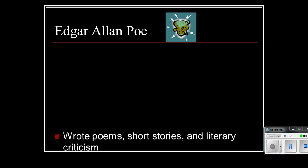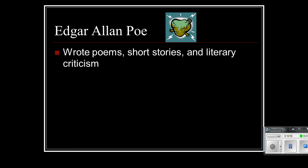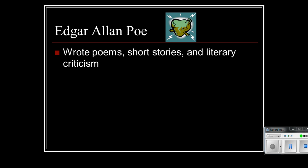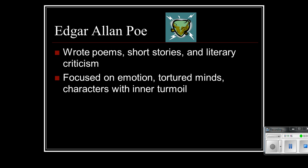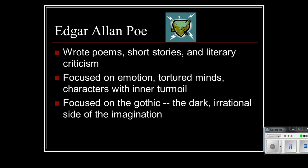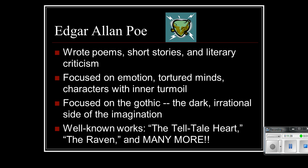Here's a man you've heard of many, many times: Edgar Allan Poe. Poe wrote a lot of literature. He was a very prolific writer, even though he was never able to make a living as a writer. He wrote poems, short stories, and literary criticism — he was probably best known during his time for his literary criticism. Poe focused on that emotional element and the focus on the supernatural elements of romanticism. He focused on the tortured minds of characters and characters who faced inner turmoil, sort of that idealism versus reality struggle. He also focused on the dark, irrational side of the imagination. One work you may have definitely heard of is the short story The Telltale Heart and the poem called The Raven.